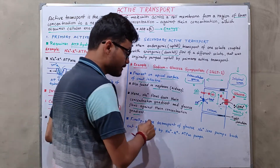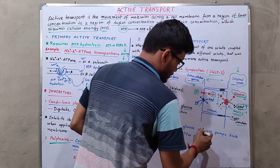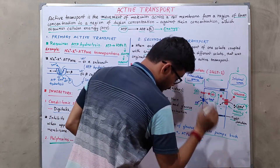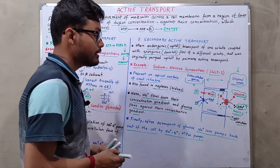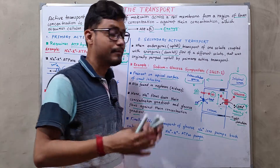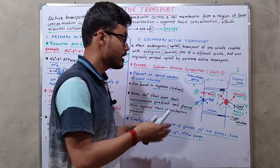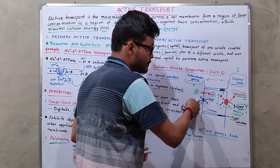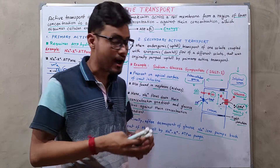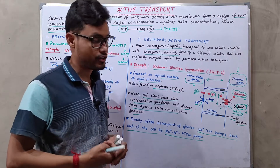After the transport of glucose and sodium ions, sodium ions are pumped back out of the cell by the sodium-potassium ATPase pump. When glucose transport from lower to higher concentration is complete, these primary active transporters are activated and help transport sodium ions out of the cell against their concentration gradient.